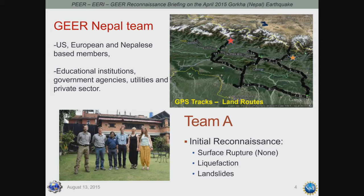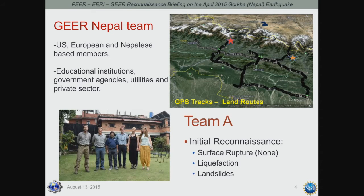When we have a large event, we usually deploy in waves. Team A deployed within a few weeks of the event. Its objectives were to conduct initial reconnaissance — looking for surface rupture, which was not found for this event — and to examine liquefaction and landslides. The GPS tracks shown here indicate the areas the team covered, along with the epicenters of the two major events I'll be discussing today.